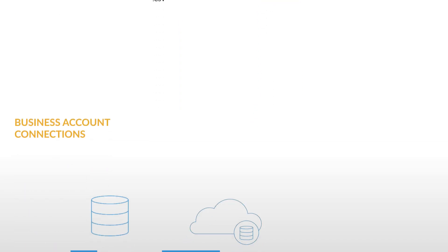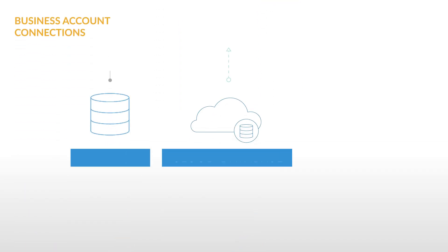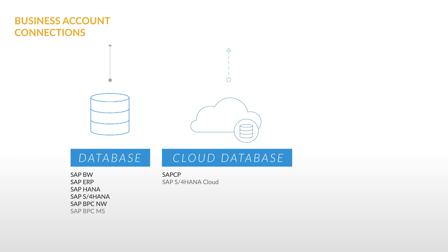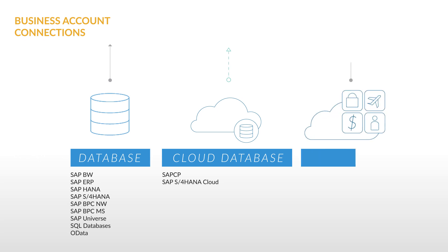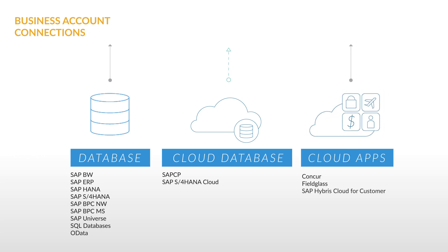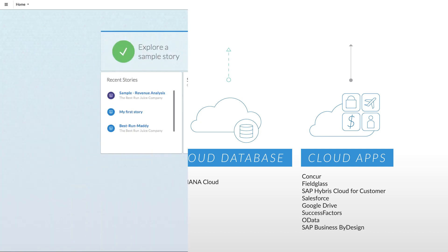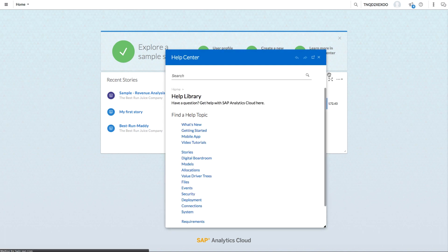When you upgrade to a business account, you'll also be able to set up connections to data sources, including on-premise systems like SAP BW or SAP ERP, and cloud applications like Concur, Fieldglass, or SAP Hybris Cloud for Customer. You can find a full list of supported connections in the Analytics Cloud help documentation under system requirements.